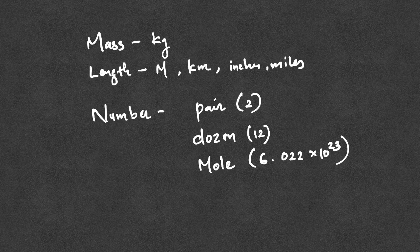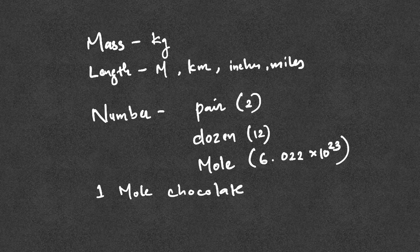Let's say one mole. What do you call 1 mole of chocolates? That means 6.022 into 10²³ chocolates.